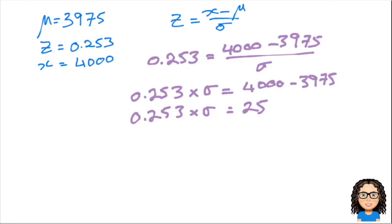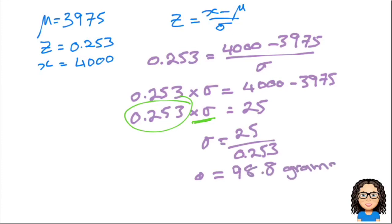Now what I want to do is I want to get my standard deviation by itself. So that means the opposite of multiplying by 0.253 is to divide. So I'm going to get my standard deviation equals 25 divided by 0.253. Put that into my lovely calculator and that will give me a value of 98.8 grams. And there I have my answer.